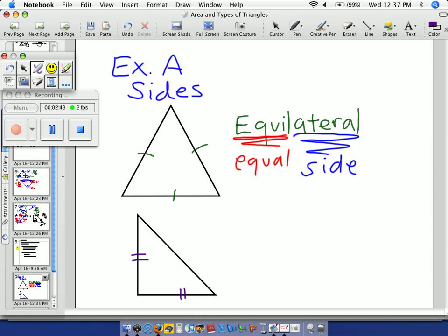Two sides of a triangle being the same, are called isosceles. Isosceles. Isosceles.